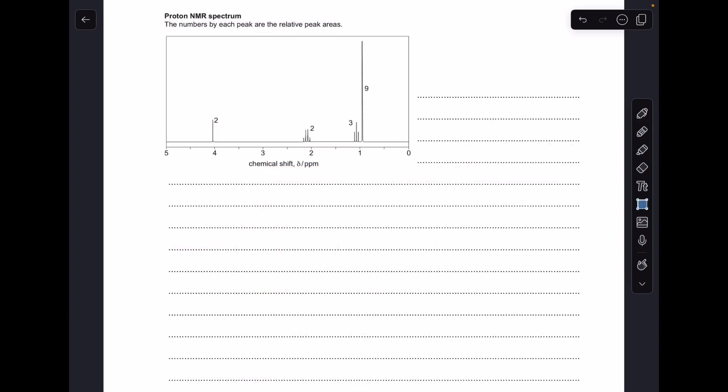Moving on now to the proton NMR spectrum, I'm going to do my usual thing: take each signal at a time and write up the same sort of information, and if possible, build up that part of the structure from the peak information.